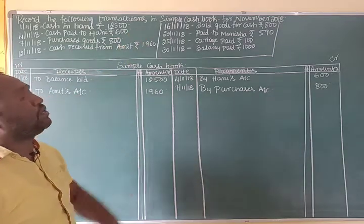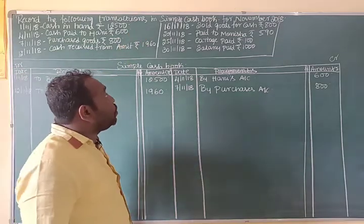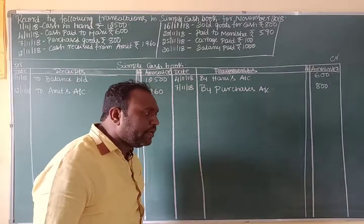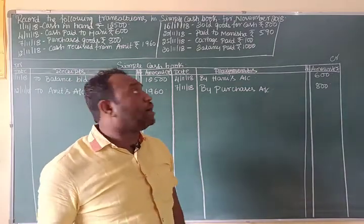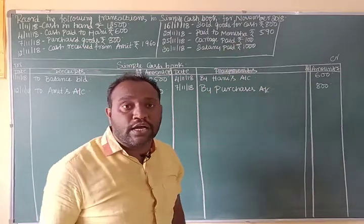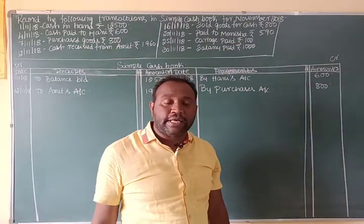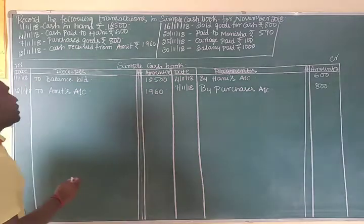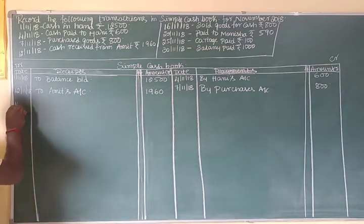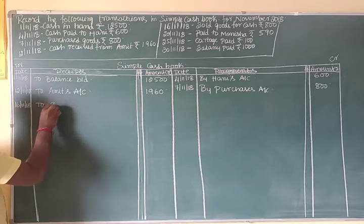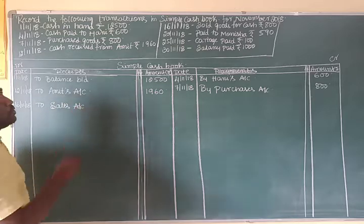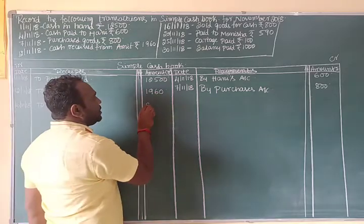16th November 2018: sold goods for cash. The general entry is: Cash Account debit, To Sales Account. Entry on the debit side: 16th November 2018, To Sales Account — Rs. 800.